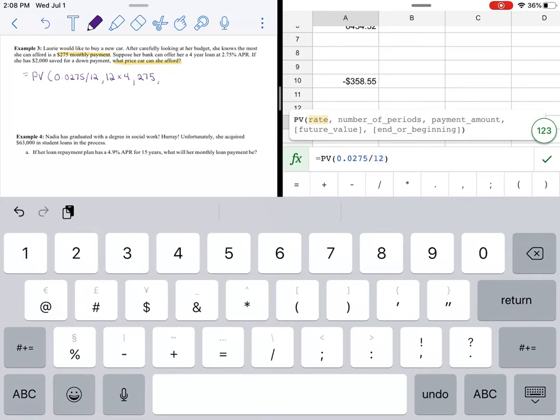Number of periods, 12 times 4. And then you'll see here, it says payment amount. So that's why we put in the 275. And then we want this to be down to zero in the future.